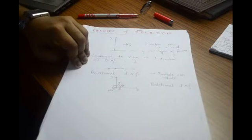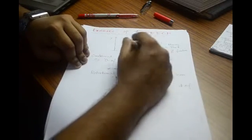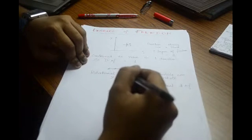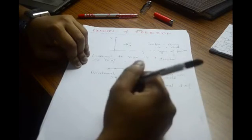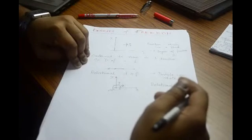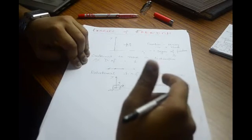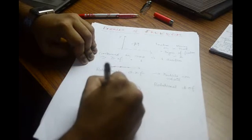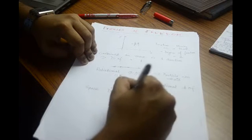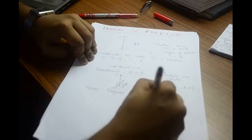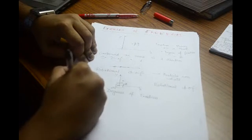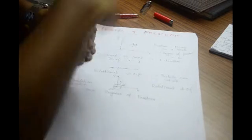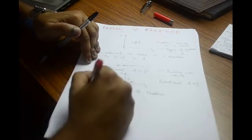Now, whether you are translating — moving in the x or y direction — or rotating, you are changing the position of the object or its individual particles. So both translation and rotation are related to a space transformation. These are called space degrees of freedom.